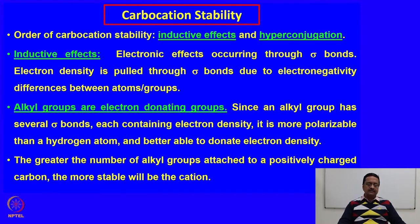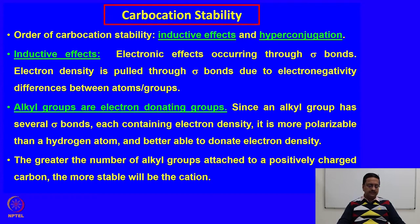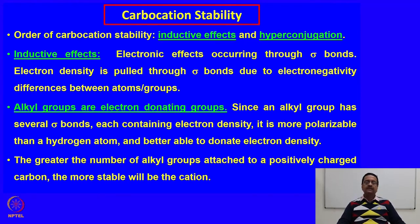The inductive effect is an electronic effect that occurs through the sigma bonds. The electron density is pulled through the sigma bonds due to electronegativity differences between the atoms and groups. The alkyl groups connected to the carbocation positive center are electron-donating groups. Since an alkyl group has several sigma bonds, each containing electron density, it is more polarizable than a hydrogen atom and hence able to better donate electron density towards the positive center. The greater the number of alkyl groups attached to the positively charged carbon, the more stable will be the carbocation.